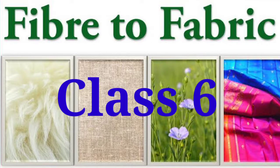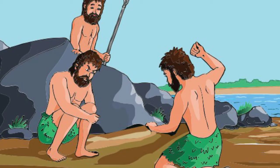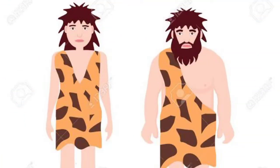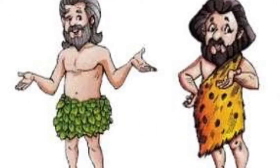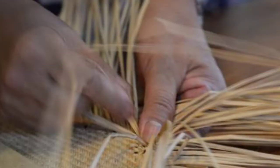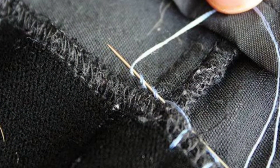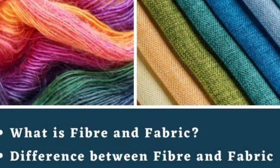Have you ever wondered what material people used in ancient times for clothing? They used to wear animal skin, bark, or leaves of trees to cover themselves. Later on, they learned how to weave cloth by twisting things. After the invention of the needle, people learned how to stitch cloth fabric.